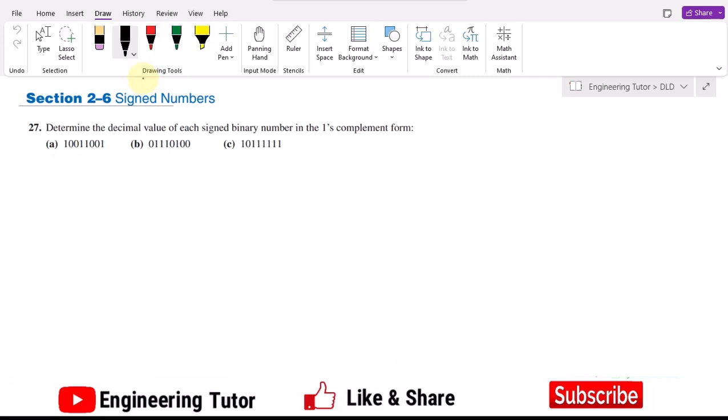This is question number 27, where we are asked to determine the decimal value of each signed binary number in the one's complement form. All the numbers mentioned here are basically the one's complement representation of any decimal number.